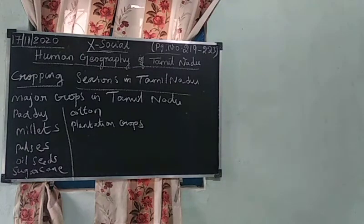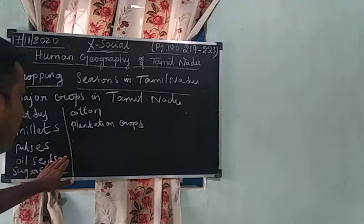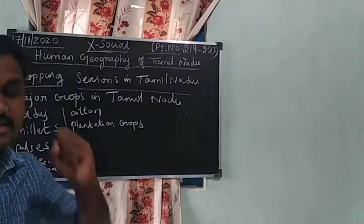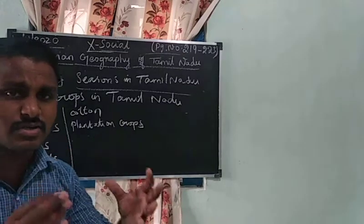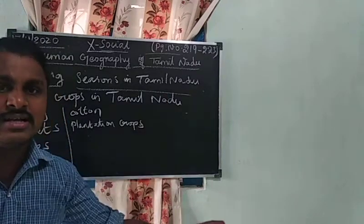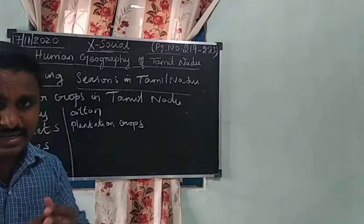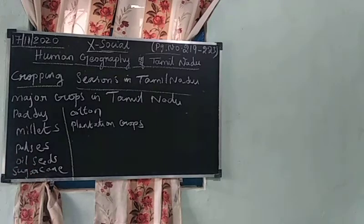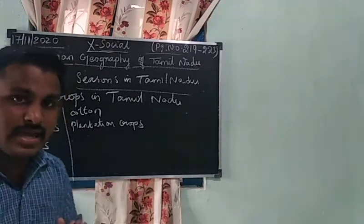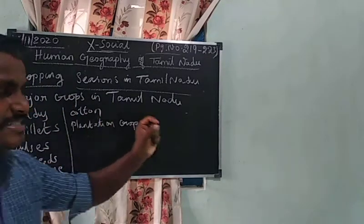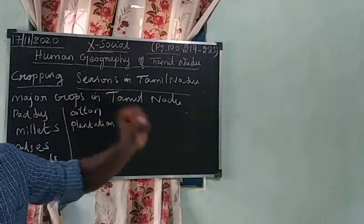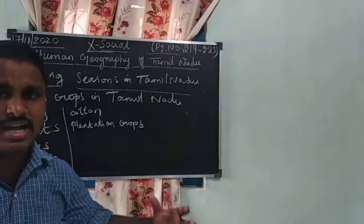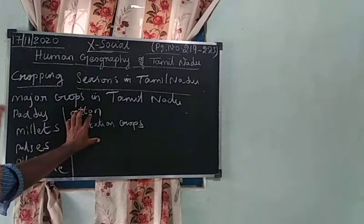Next are oilseeds: groundnut, gingelly, castor, coconut oil, sunflower oil, and mustard oil. These are major crops in Tamil Nadu used for subsistence as well as commercial farming. Next is sugarcane — a suitable crop in Tamil Nadu. The sugarcane industry in Namakkal district is well known. Sugarcane is suitable for alluvial soil. Next is cotton, which is cultivated in black soil.